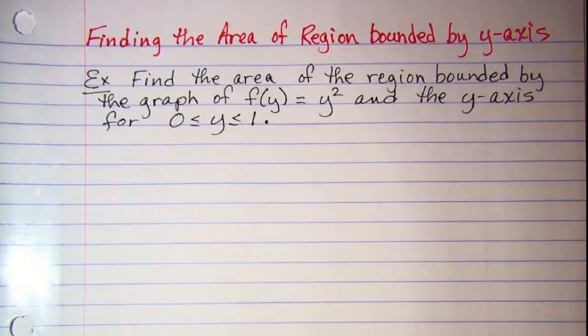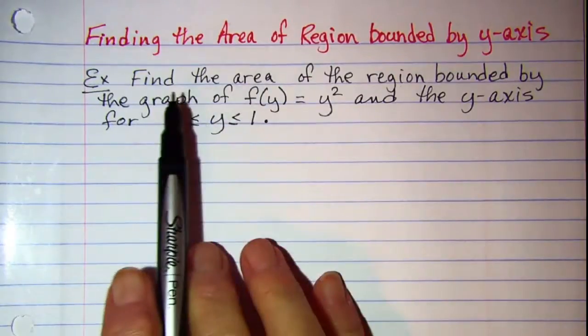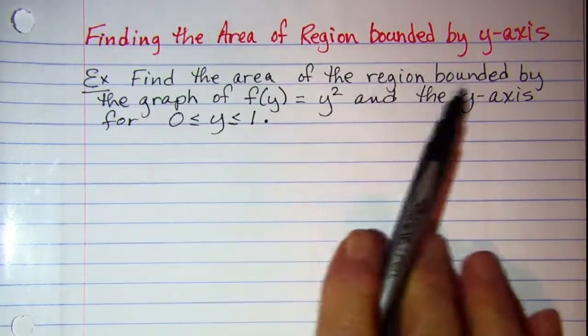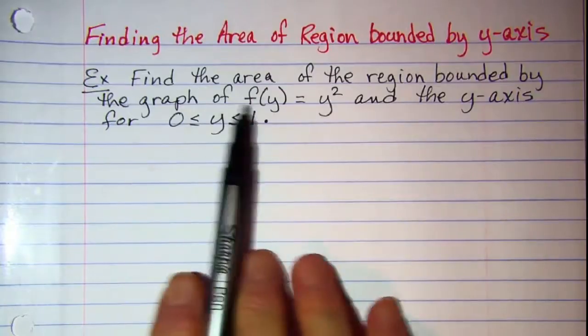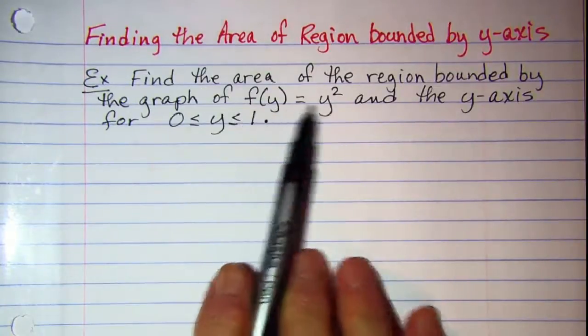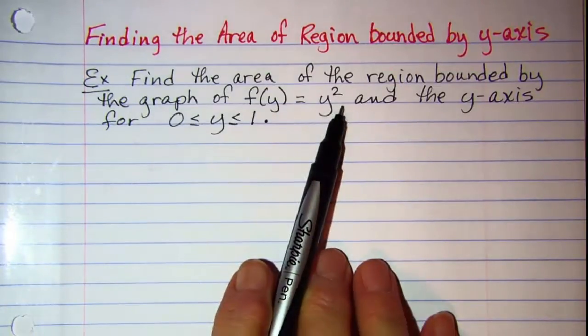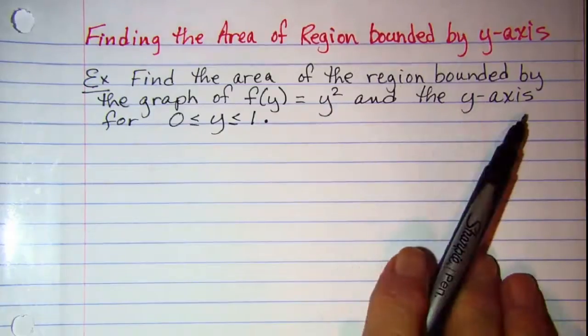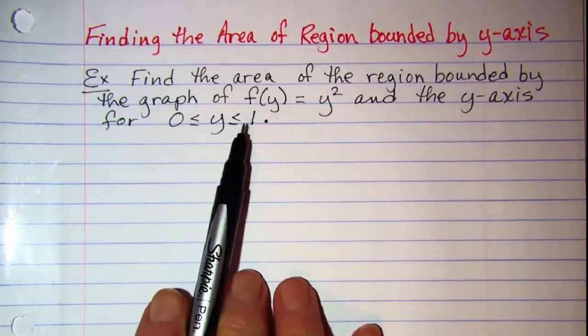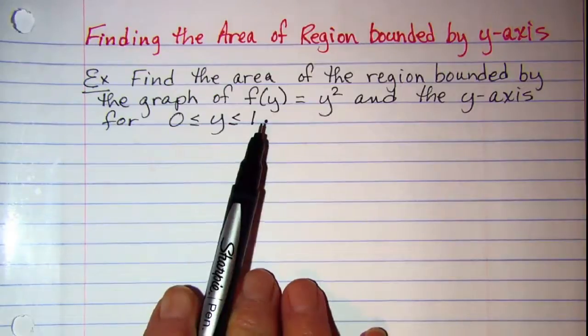In this video we'll be finding the area of the region bounded by the y-axis. The problem that we'll be doing is find the area of the region bounded by the graph of f of y equals y squared and the y-axis for y between 0 and 1 inclusive.